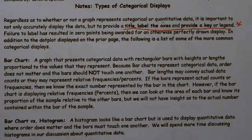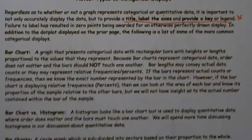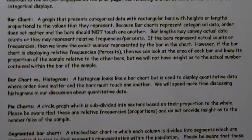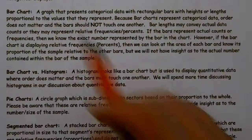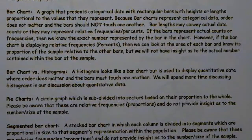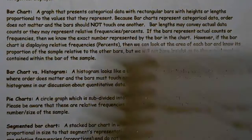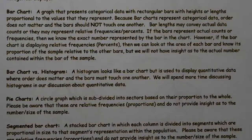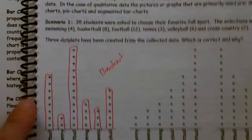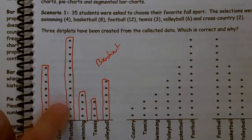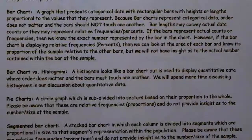We're going to have a list of some of the more common categorical displays, and then I'll show examples of those in the next video. So a bar chart — which we previously discussed — is a chart where the bars are not actually touching. The reason they can't touch is because order doesn't matter. Now, that's what AP says: the bars shouldn't touch, but every now and then they have them touching and still call it a bar chart, so they've not been really picky about it.